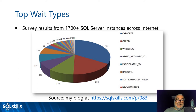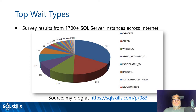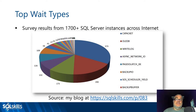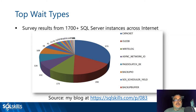From that survey, compared to a previous one five years earlier, not much had changed — except the OLEDB wait had jumped from around number 10 to number 2. The obvious knee-jerk reaction is 'must be a linked server problem,' but the real cause was the huge proliferation of third-party performance monitoring tools. Most of these tools run DMVs in a loop, and DMV definitions use 'SELECT * FROM OPENROWSET' internally — which uses the OLEDB transport. So those billions of tiny OLEDB waits are your monitoring tool.